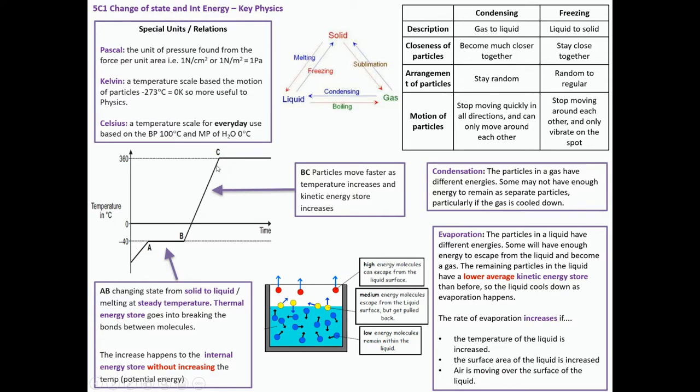Specifically, you should be able to talk about change of state graphs. You're looking at how things are melting and heating up and the particles move faster. From B to C, particles move faster as temperature increases. The kinetic energy store goes up. This part where it's A to B is going from a solid to a liquid, and the temperature is steady. The difference is the thermal energy store goes into breaking the bonds between molecules. There is an increase in our internal energy without increasing the temperature. It's a difference between potential energy and bonding changes to kinetic energy where the actual temperature goes up.